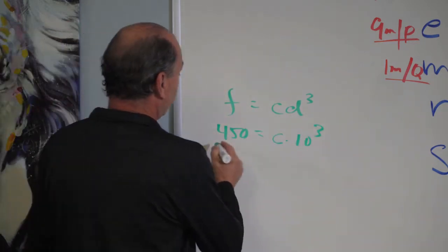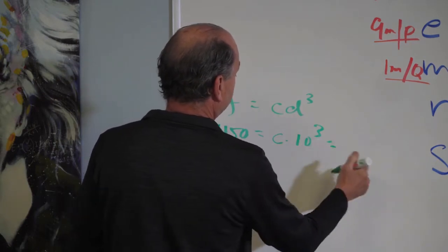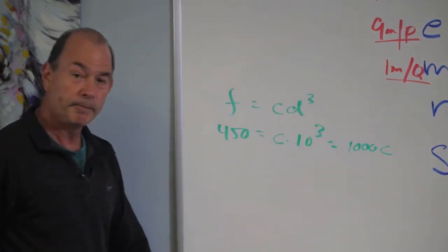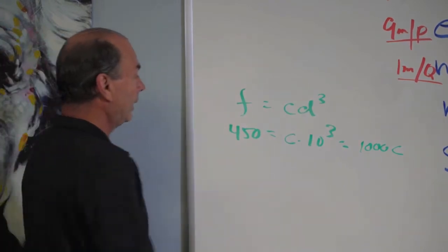All right. So what do we do? We cube it. So 450 equals 10 cubed is 1,000, C, right? 1,000 times C. And now we want to solve for C. So we divide by 1,000.